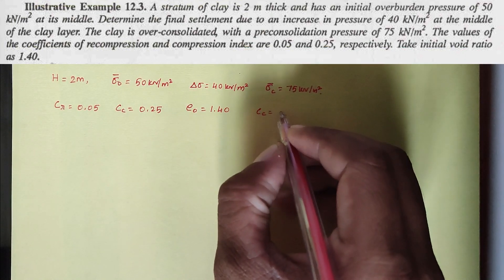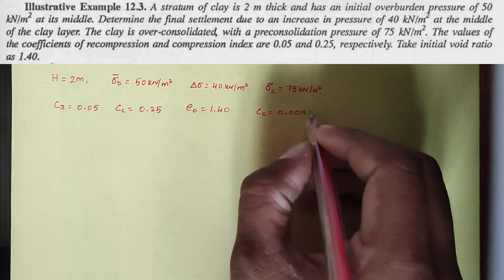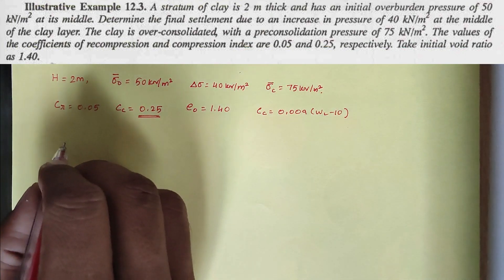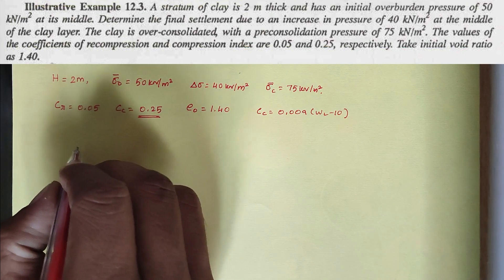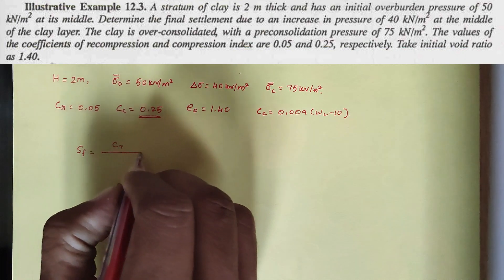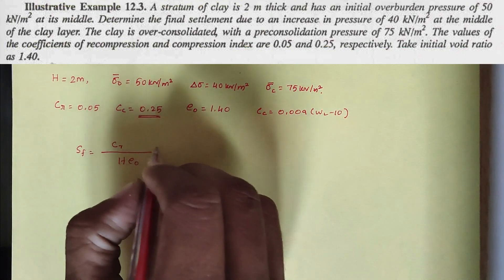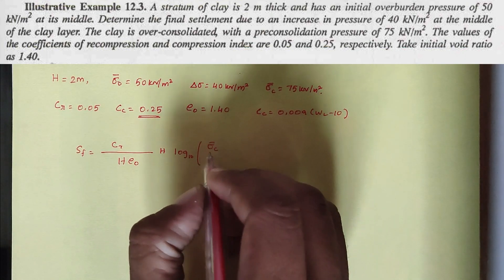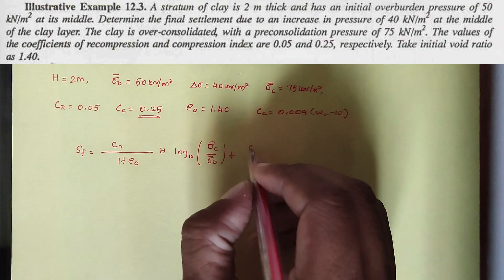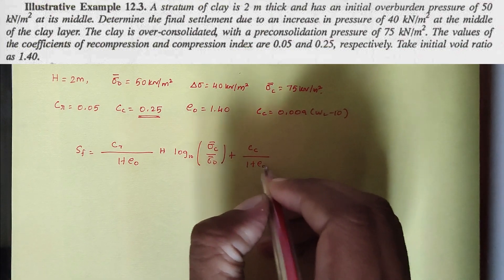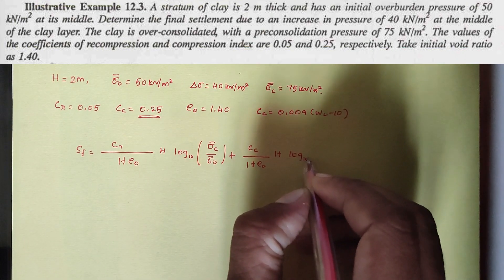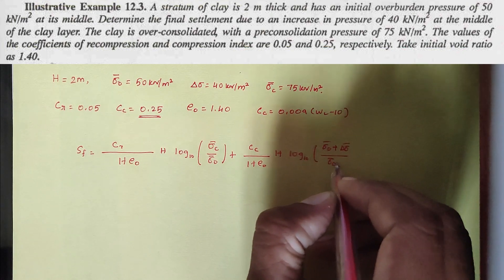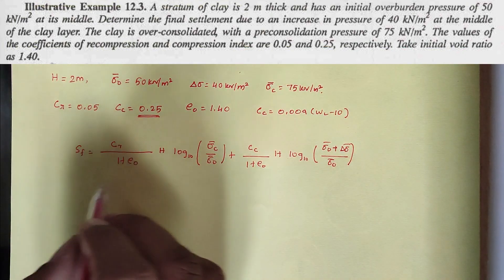The compression index formula 0.009 × (wL − 10) is not needed since the direct value of 0.25 is given. The formula for final consolidation settlement is: Sf = [Cr / (1 + e₀)] × H × log₁₀(σc / σ₀) + [Cc / (1 + e₀)] × H × log₁₀((σ₀ + Δσ) / σc).